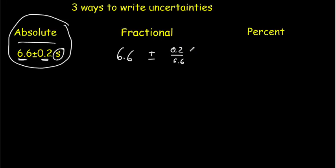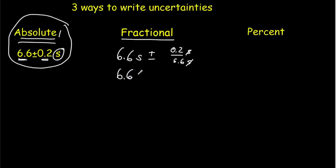When you write it as a fractional uncertainty, you've really got seconds divided by seconds, so there are no units in that fraction. The only units are in the value. So make sure that you put the units in with the value, otherwise your reader isn't going to be able to tell whether you're writing in absolute form or fractional form. We'd usually write that as 6.6 seconds plus or minus 0.03.